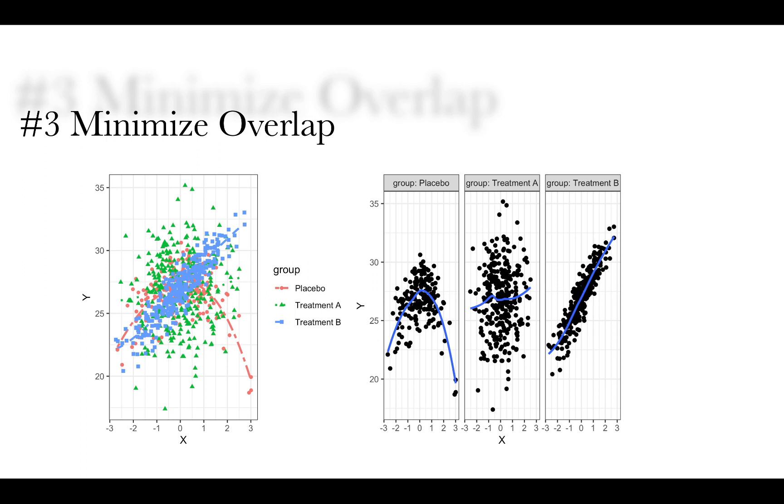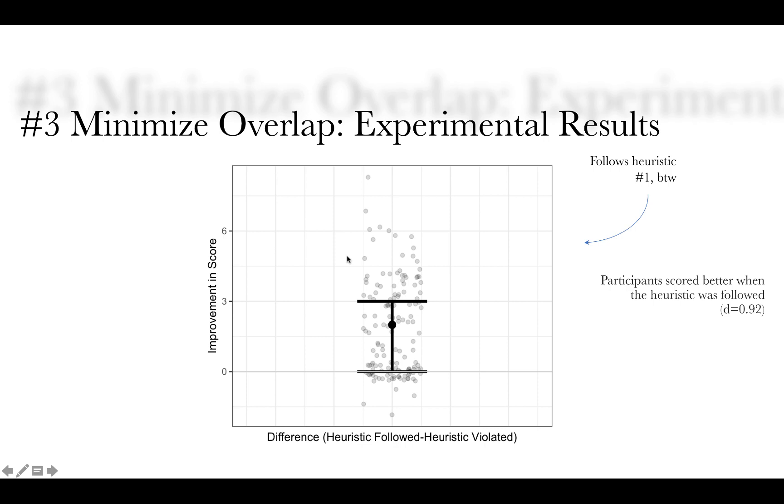And what we did was we actually presented this to participants and asked them a bunch of fact-based questions about the relationships and scored them both when the heuristic was violated and when the heuristic was followed. And what we found, the y-axis is the difference score or the improvement when the heuristic was followed relative to when the heuristic was violated. So positive scores mean that they did better when the heuristic was followed. And not surprisingly, most people did way better when the heuristic was followed. And Cohen's d for this was 0.92.